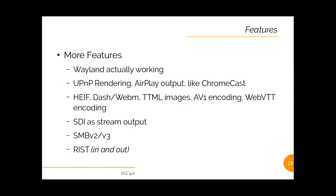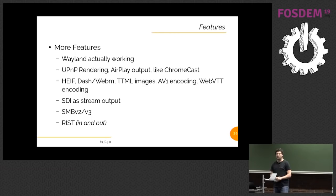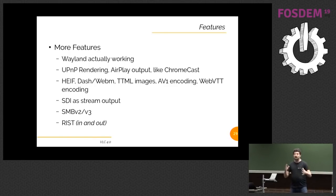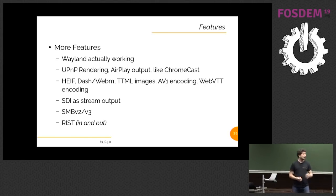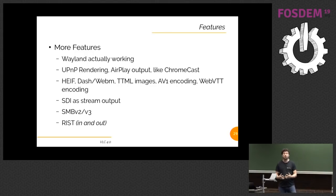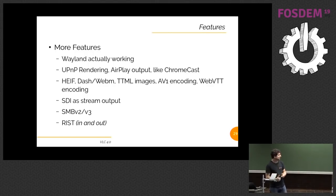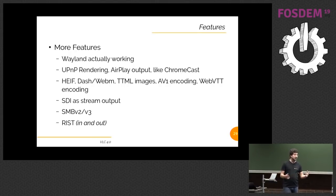More features in VLC 4.0: Wayland actually works — the screenshots you've seen were taken on Wayland. As in 3.0 we had Chromecast, now we are adding UPnP rendering, so any smart TV or anything that understands UPnP as a client can be used in the same way with the same UI. We're also going to have AirPlay — AirPlay 1 — to do exactly the same, and you don't care what protocol is underneath. We added Dash WebM, TTML subtitles, images, AV1 encoding, WebVTT encoder. We moved SDI output from video output to stream output to support way more SDI stuff. We support SMB v2 and 3 thanks to a new library, and we support the SRT protocol in and out — also on Android and iOS.